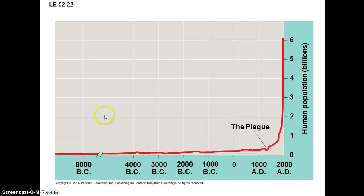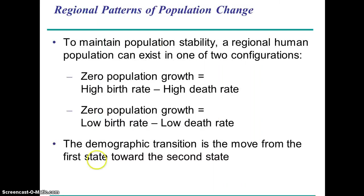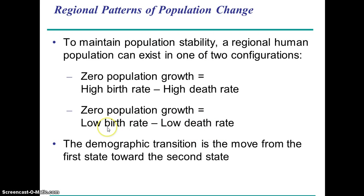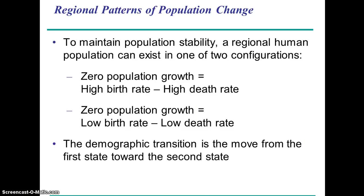Way back in early human history we had very low growth — essentially zero growth — but that was a period with relatively high birth rates and also high death rates. This was the age before antibiotics and modern medicine, so mortality rates were much higher. More ideally, we would now reach a period of zero population growth with low birth rates and low death rates. This phenomenon is known as the demographic transition.